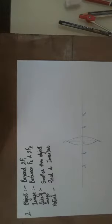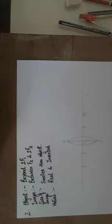The next ray diagram that we are drawing is when the object is beyond 2F1. The image will be formed between F2 and 2F2. The size of the image will be smaller than the object and the nature will be real and inverted.